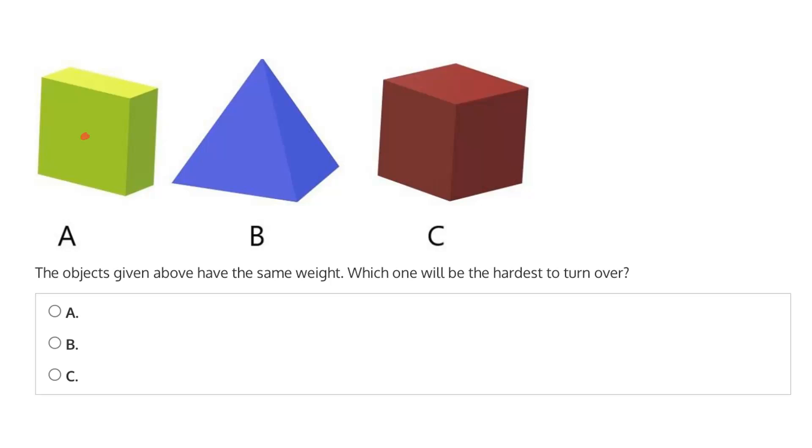So in objects A and C, it's relatively straightforward. The center of mass is simply in the center of the object.